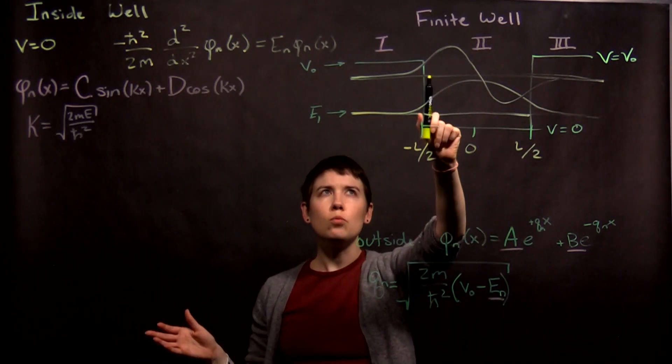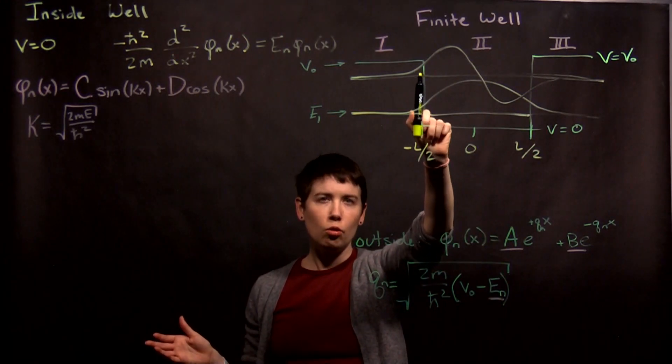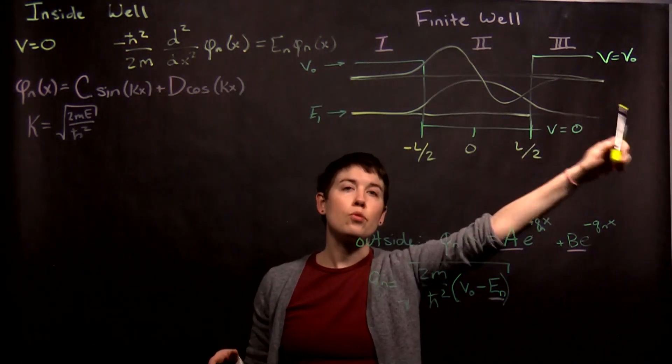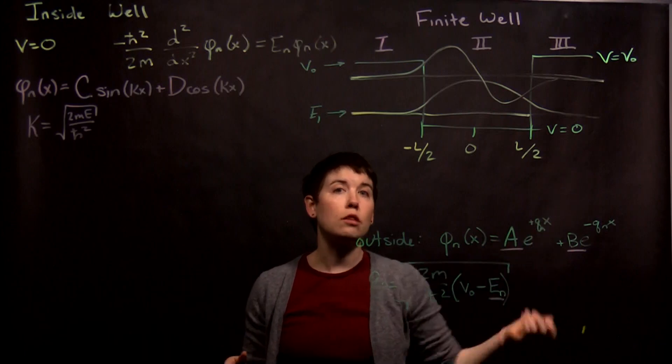So it's pretty clear that region 1 would be from negative l over 2 to negative infinity, region 2 is in the well, and region 3 for x is greater than l over 2.